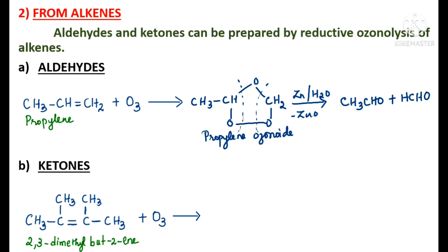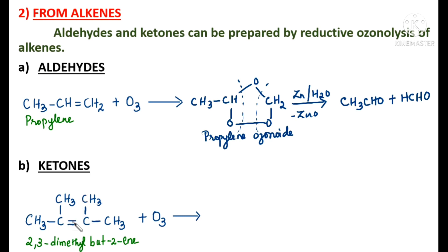Ketones are obtained by the reductive ozonolysis of alkenes which possess branching at one or both of the carbon atoms involved in the double bond. If the carbon atoms involved in the double bond have branches, those type of alkenes will give ketones.